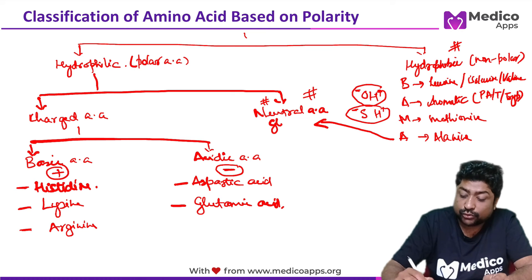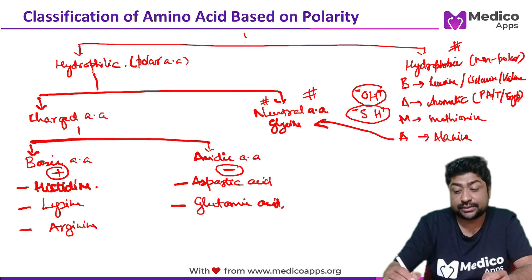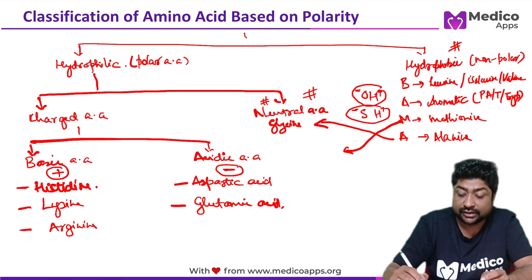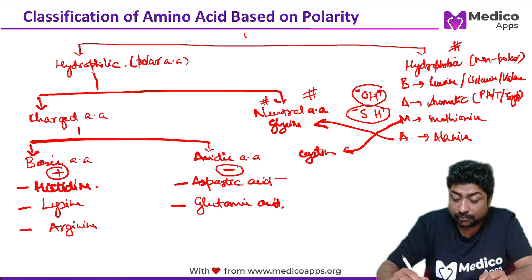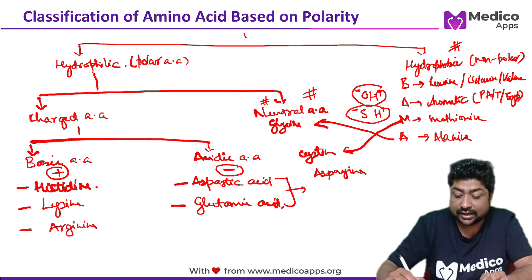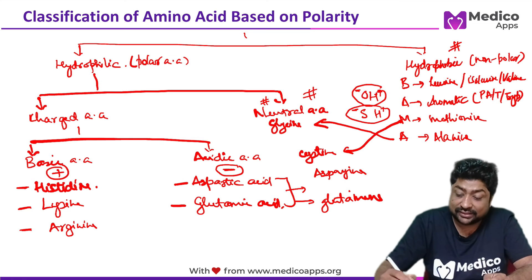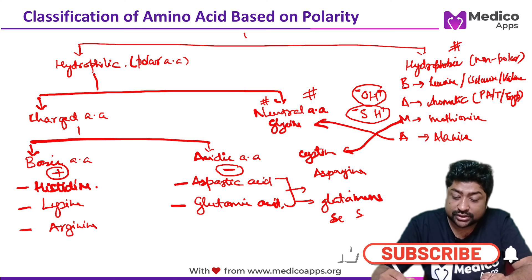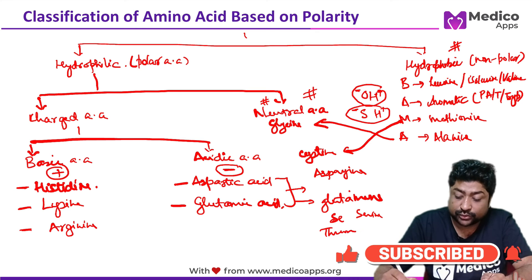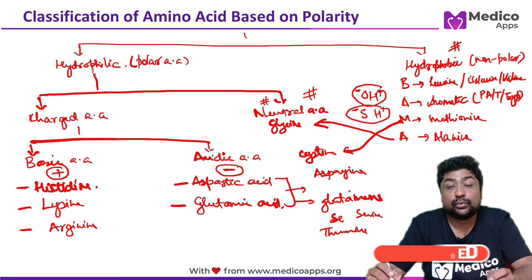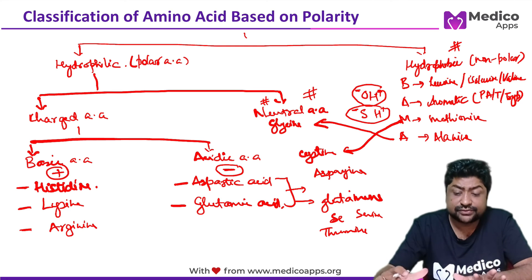For neutral amino acids: alanine has a counterpart glycine; methionine has a sulfur-containing counterpart cysteine. Aspartic acid and glutamic acid have their amide partners asparagine and glutamine, which are neutral. And then we have the OH-containing group: serine and threonine — all of these are neutral amino acids.